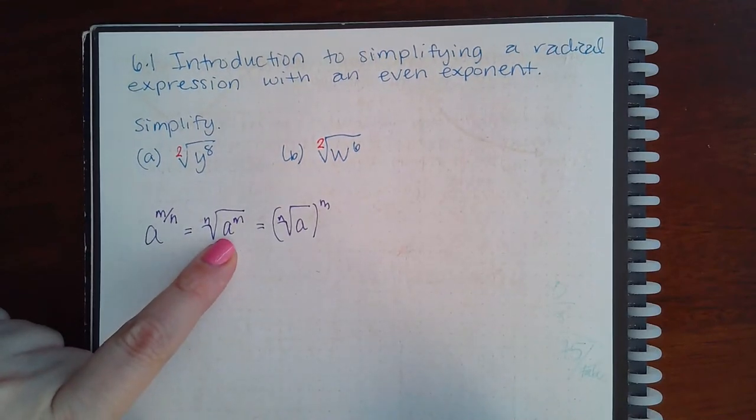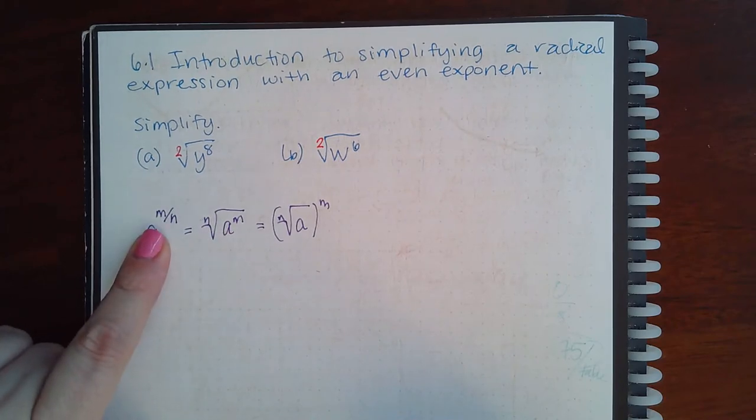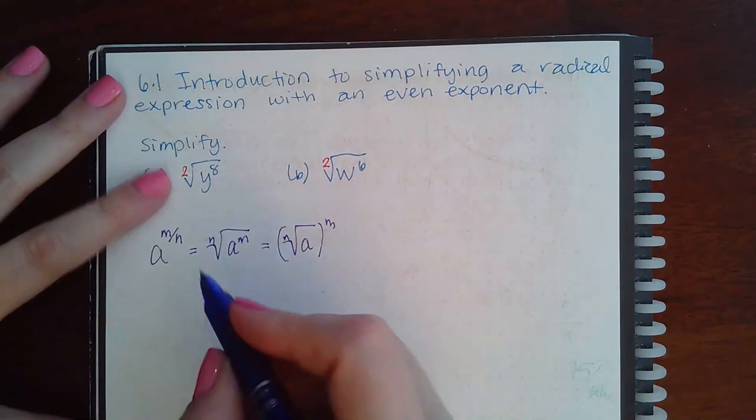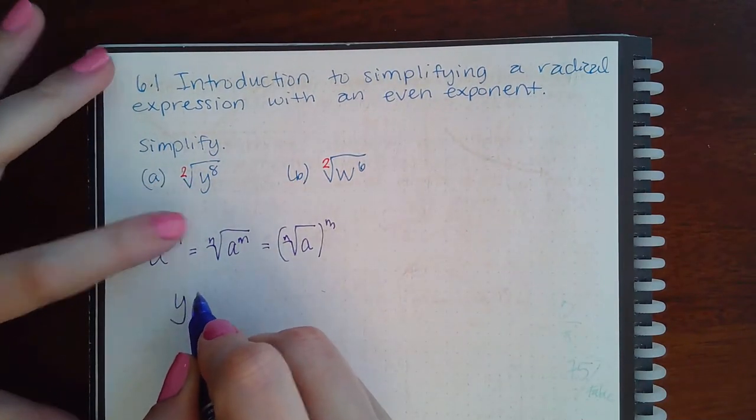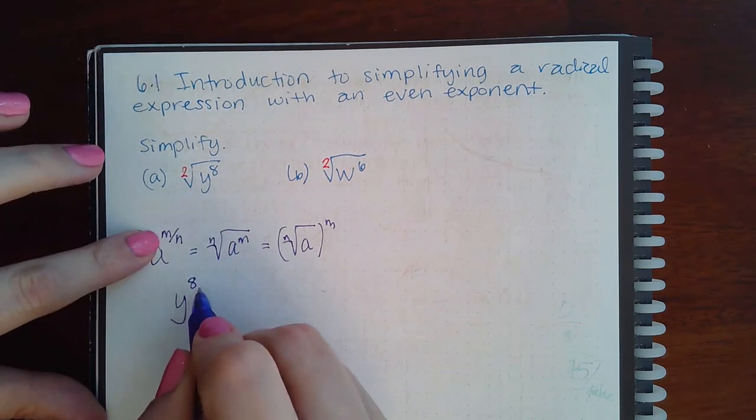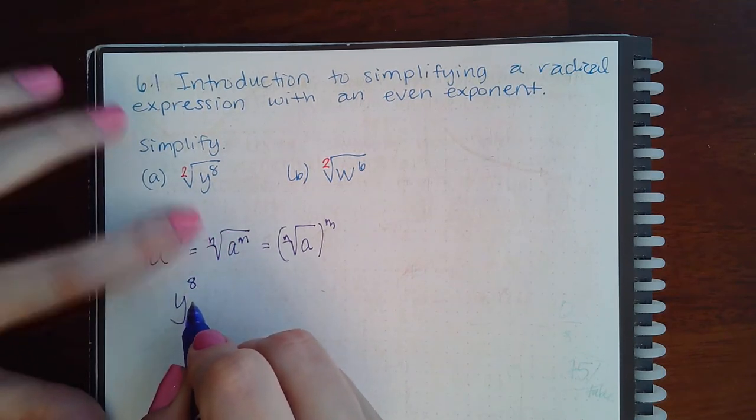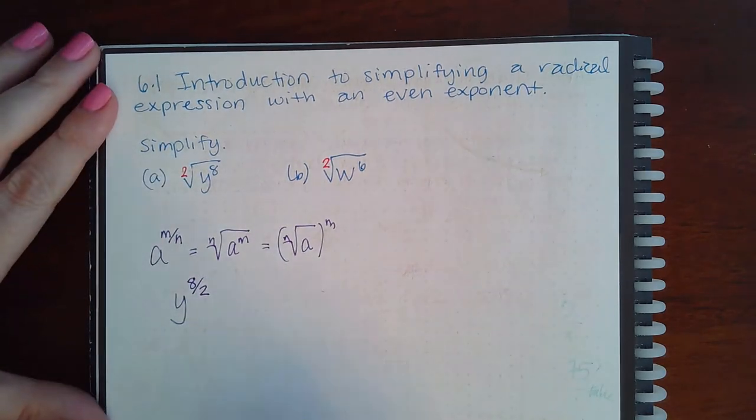Now for us, we are given the problem in this expression. So what we want to do is change this expression's form into this form. If I do that, that means my base is y and my exponent on the inside, which becomes my numerator, is 8. The index which is out here becomes my denominator. Then if I simplify that fraction, 8 divided by 2 is actually 4.